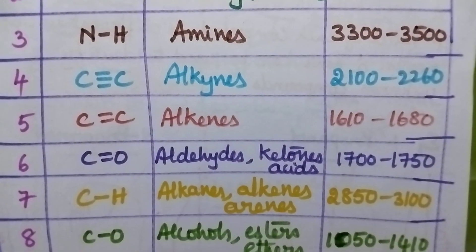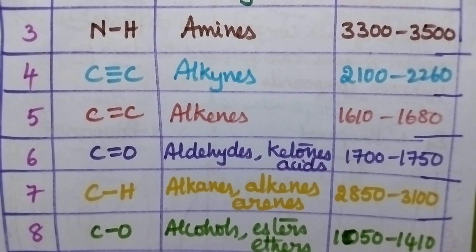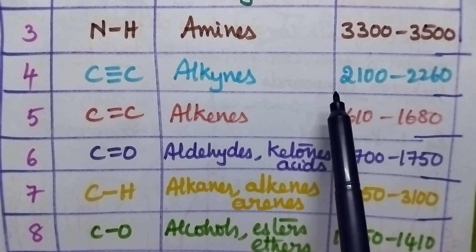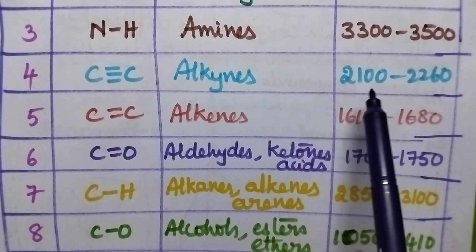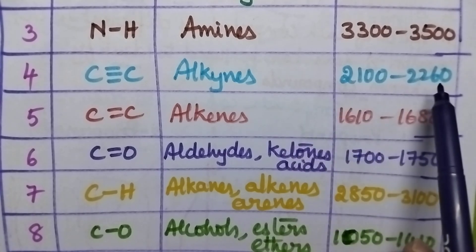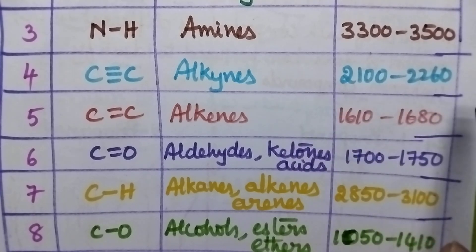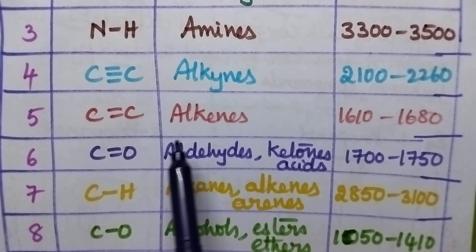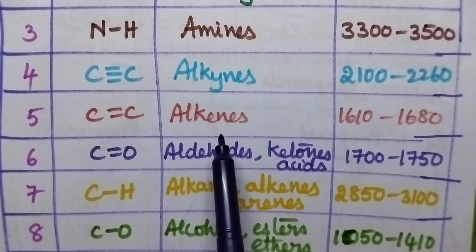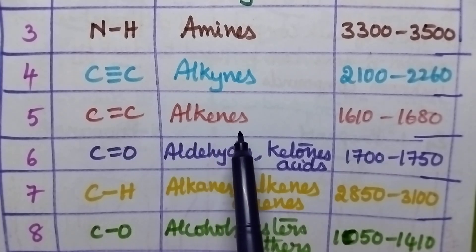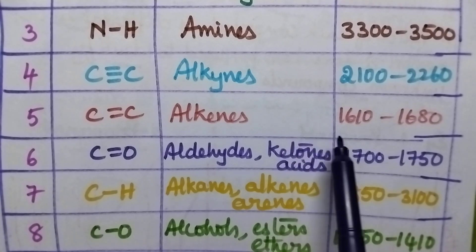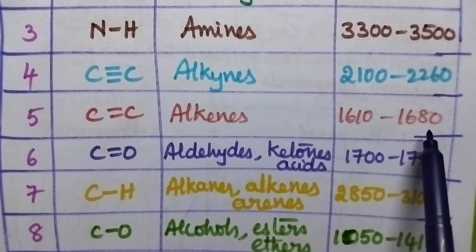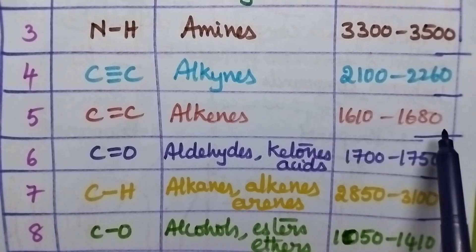C triple bond C present in alkynes will show a characteristic absorption around 2100 to 2260 cm inverse. C double bond C group present in alkenes will show a characteristic absorption around 1610 to 1680 cm inverse.